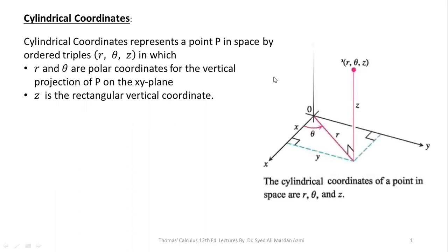The cylindrical coordinates represent a point P in space by ordered triples (R, theta, Z), in which R and theta are polar coordinates for the vertical projection of P on the xy-plane, and Z is the rectangular vertical coordinate. In two-dimensional space, if you see here in this diagram, taking only the x-axis and y-axis, the coordinates of a point in polar coordinates are R and theta. If we shift this point vertically upward in the third direction, which is Z, then the coordinates become R, theta, and Z — the cylindrical coordinates. The base of cylindrical coordinates is always a polar coordinate in two dimensions; if we take Z equal to 0, we come back to the two-dimensional space.